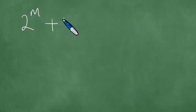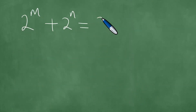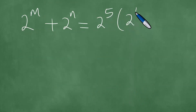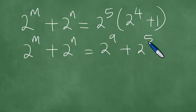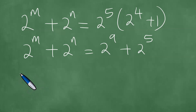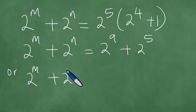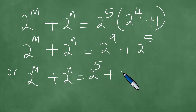So we have 2^m + 2^n equals 2 to the power 5 times (2 to the power 4 plus 1), which expands to 2 to the power 9 plus 2 to the power 5. We recognize that addition of real numbers is commutative, so we can also write this as 2^5 + 2^9.